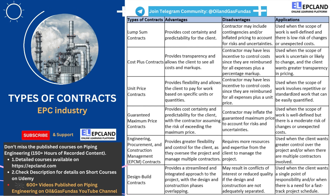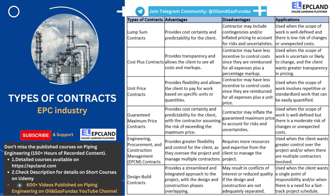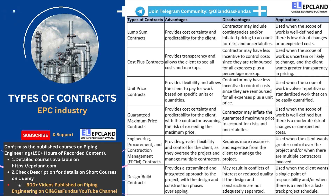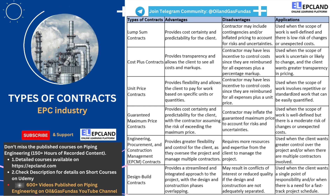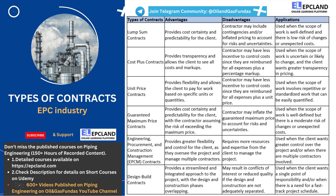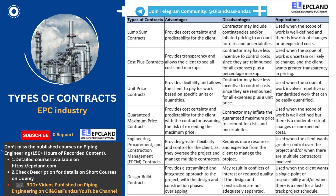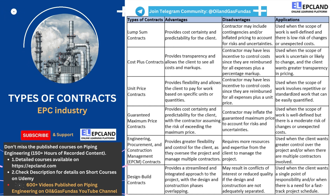However, there are also some potential disadvantages to GMP contracts. Because the contractor assumes the risk of exceeding the maximum price, they may inflate the guaranteed maximum price to account for risks and uncertainties. This can result in higher overall costs for the client. Overall, GMP contracts are best suited for projects with a well-defined scope of work but a moderate risk of changes or unexpected costs. They can provide cost certainty and predictability for the client, while also incentivizing the contractor to keep costs down. However, they may result in higher overall costs if the contractor inflates the guaranteed maximum price. As with any type of contract, it is important to carefully consider the specific terms and conditions of a GMP contract before entering into it.